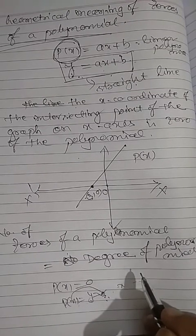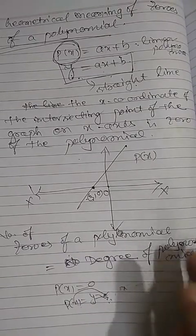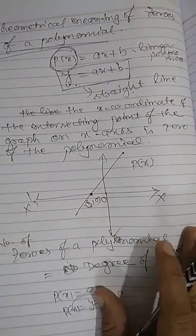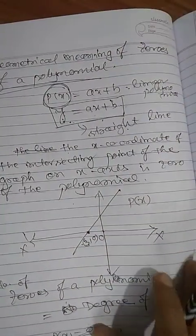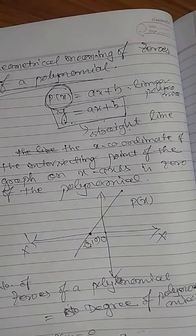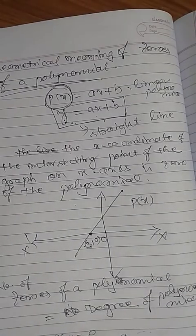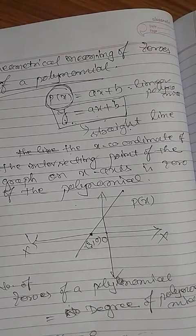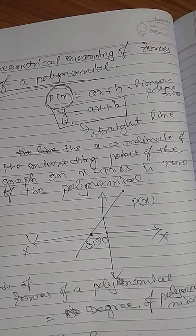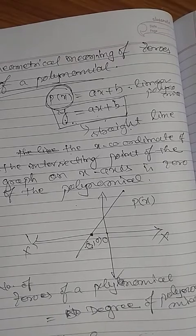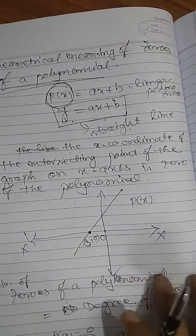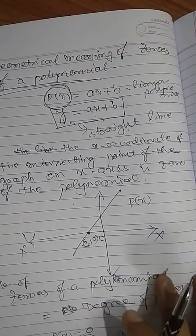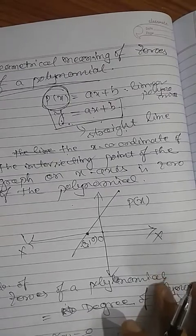This is about the geometric representation of zeros of a polynomial. You have to equate the polynomial to y. The graph may vary — it may be parabolic, hyperbolic, a straight line, or some other curve — the graph depends upon the equation of the polynomial. You can solve Exercise 2.1. Thank you.